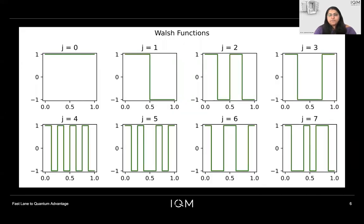So let me show you what the first 8 Walsh functions look like. And here they are. Looking at these, you can already understand that the step function can be very well represented by a few number of Walsh functions, both accurately as well as exactly. Therefore, we are now having to implement very few multi-qubit interactions on the chip.